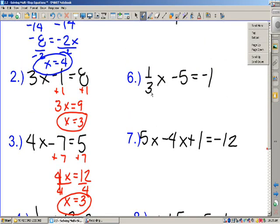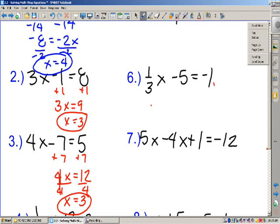Let's take a look at number 5. I want to take care of this 3 by itself here, so I'm going to subtract 3. That leaves me with negative 3 over 4x equals negative 9. How do I get rid of a negative 3 fourths? By multiplying by its reciprocal, negative 4 over 3.